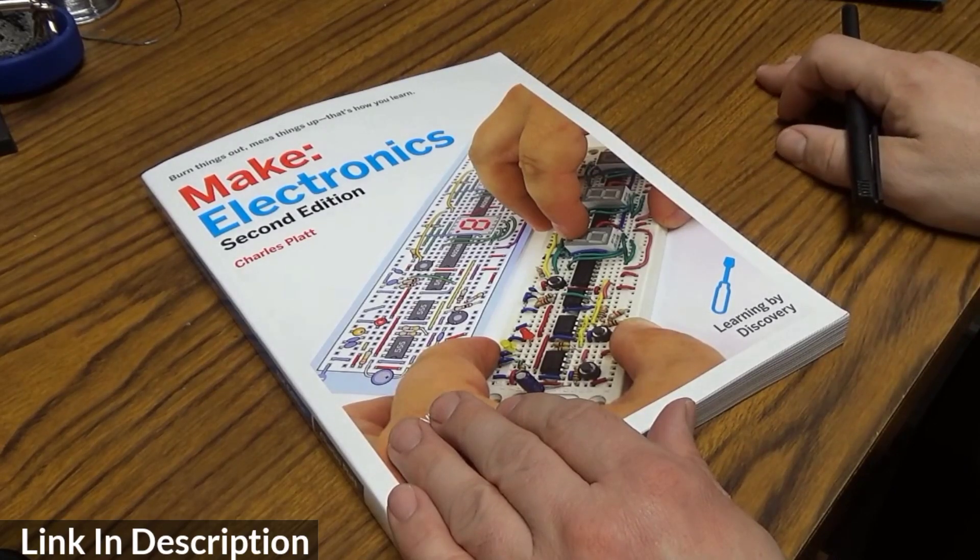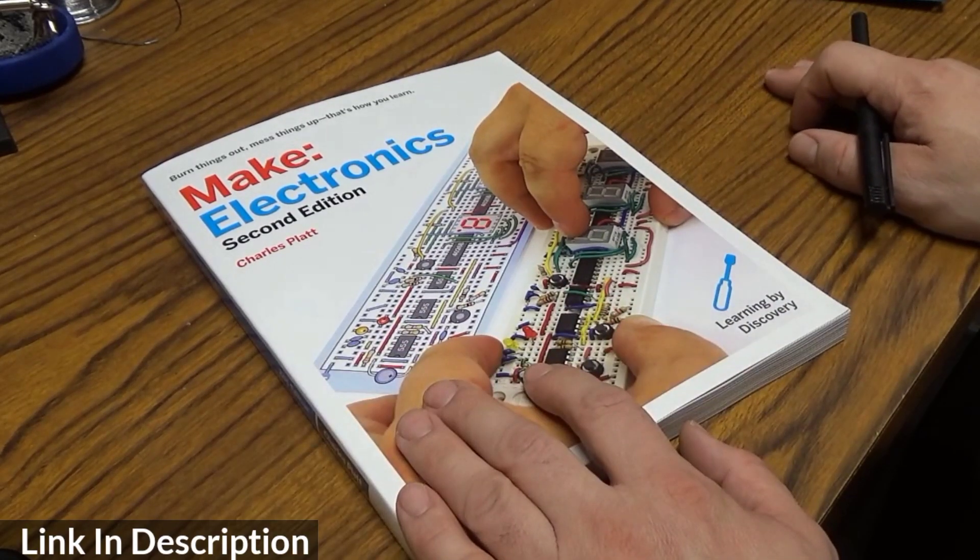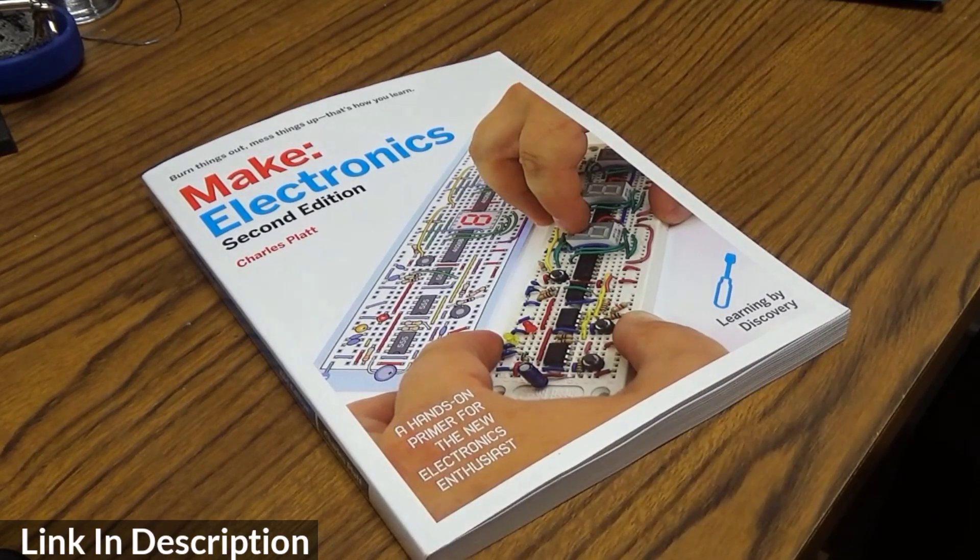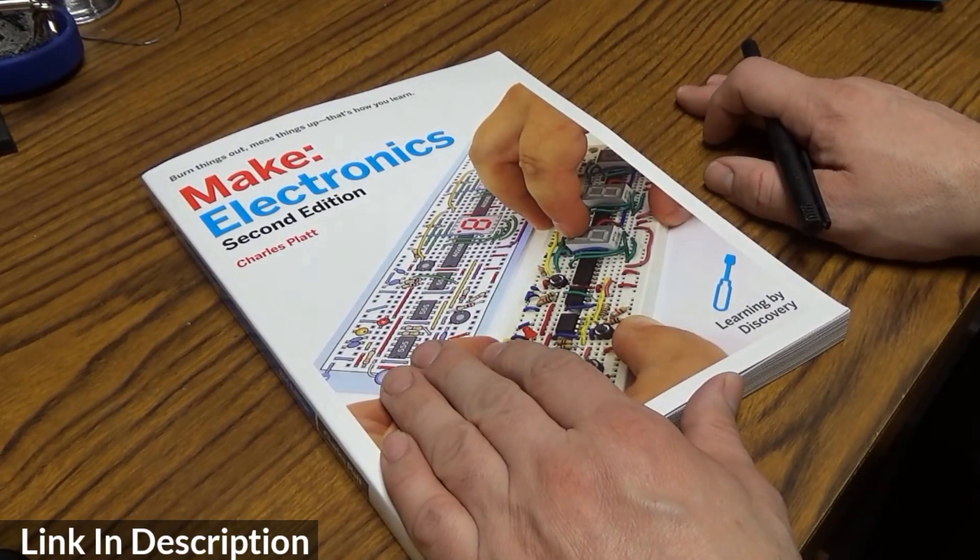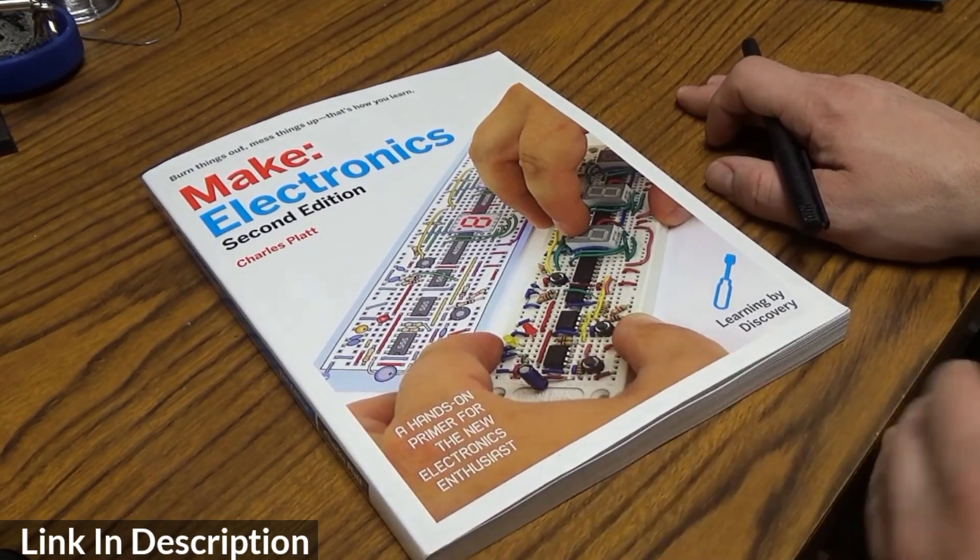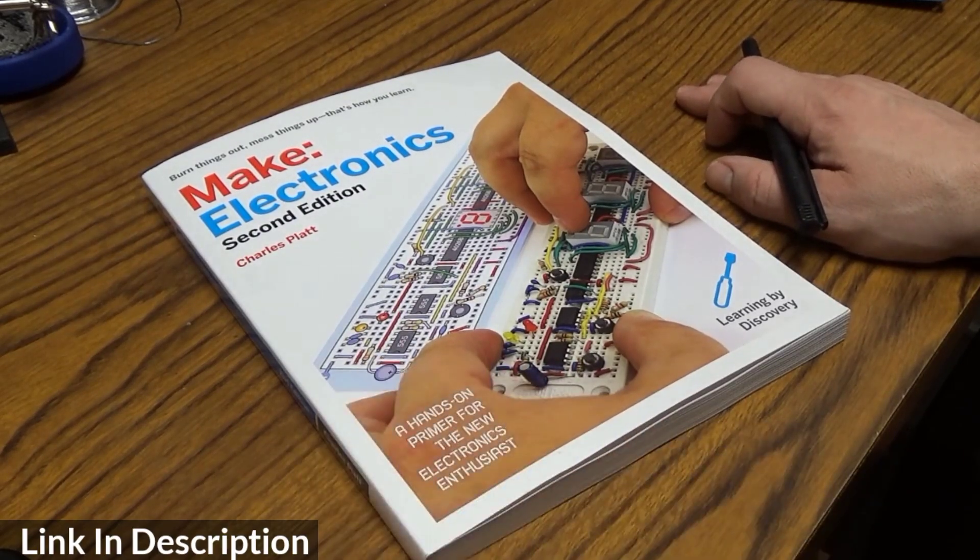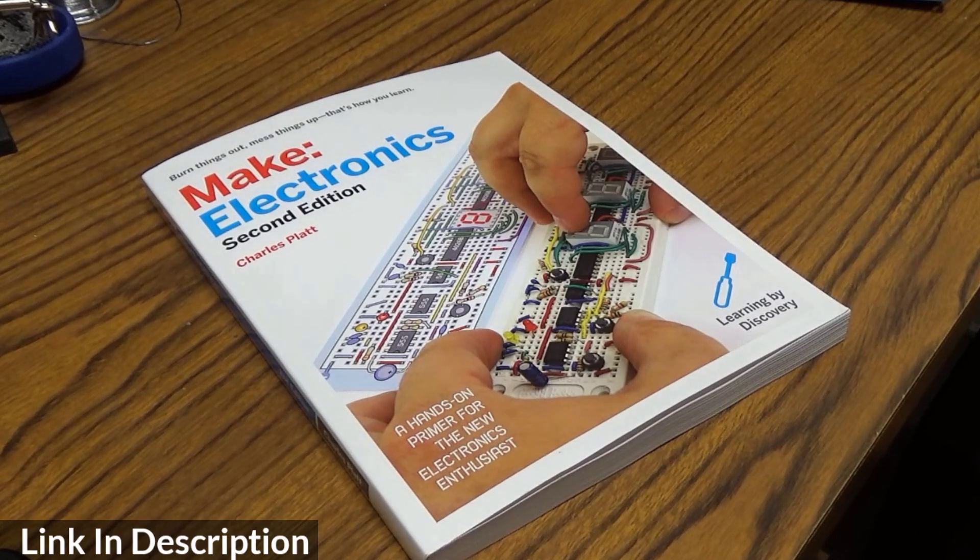This is the first book in a series by Charles. The next one is Make More Electronics, and then he also has an electronic component encyclopedia that I think is currently three volumes. In those series of books they talk about various types of components and how they work and how you'd use them.